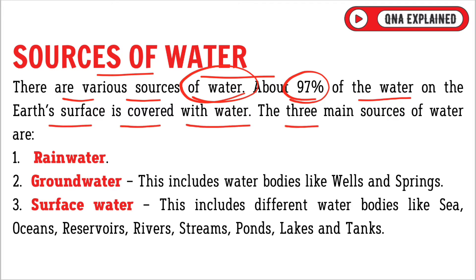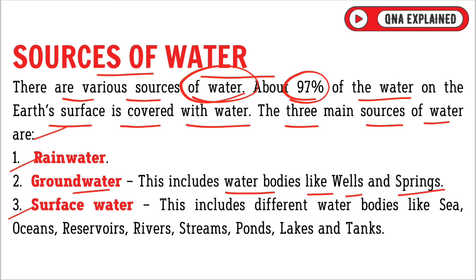The three main sources of water are: first, rainwater; second, groundwater, which includes water bodies like wells and springs; and third, surface water.